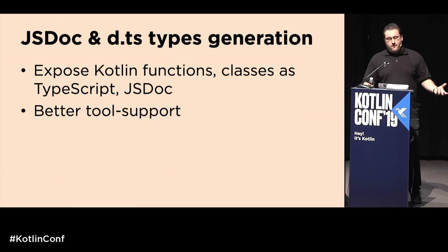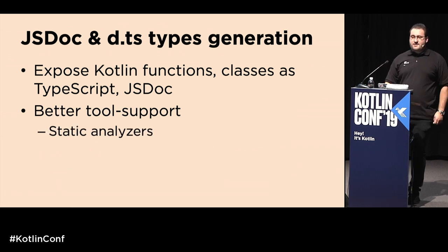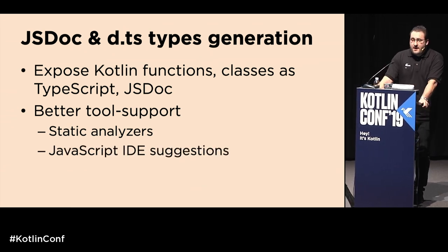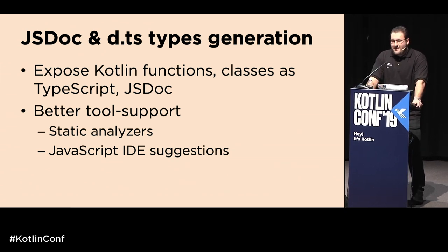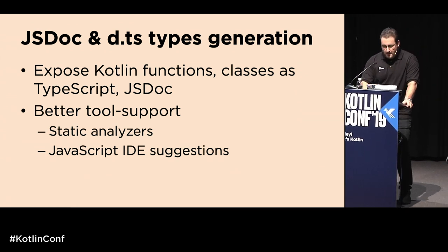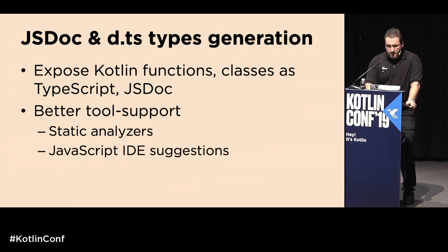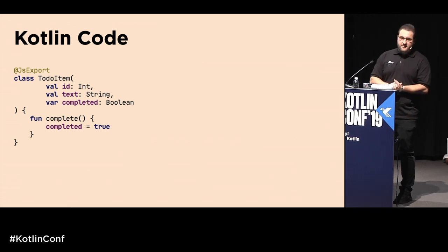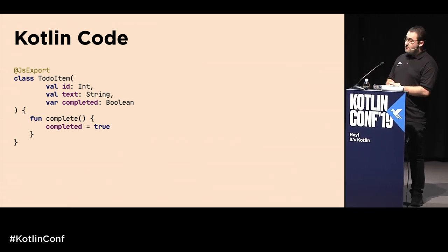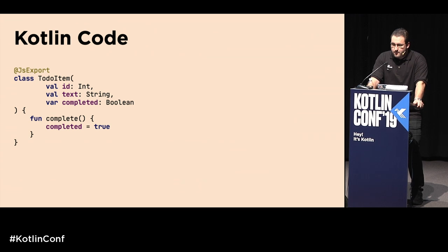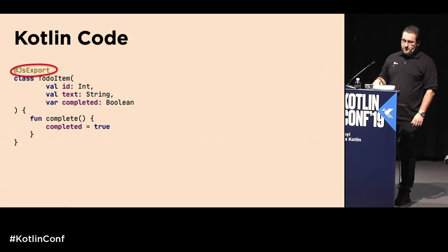If you're using a JavaScript IDE like WebStorm that uses JSDoc or .d.ts files for autocomplete, when writing JavaScript you'll also get autocomplete for your Kotlin code. To demonstrate: here's a small Kotlin class — a TodoItem with an id, some text, a completed flag, and a function. In the new backend, we mark this with the @JsExport annotation, telling the compiler to emit type signatures.